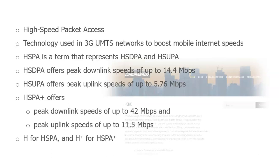HSPA is a combination of HSDPA and HSUPA. The downlink helps with downloads and the uplink helps with uploads. HSDPA can offer peak downlink speeds of up to 14.4 Mbps, and HSUPA can offer peak uplink speeds of up to 5.76 Mbps.